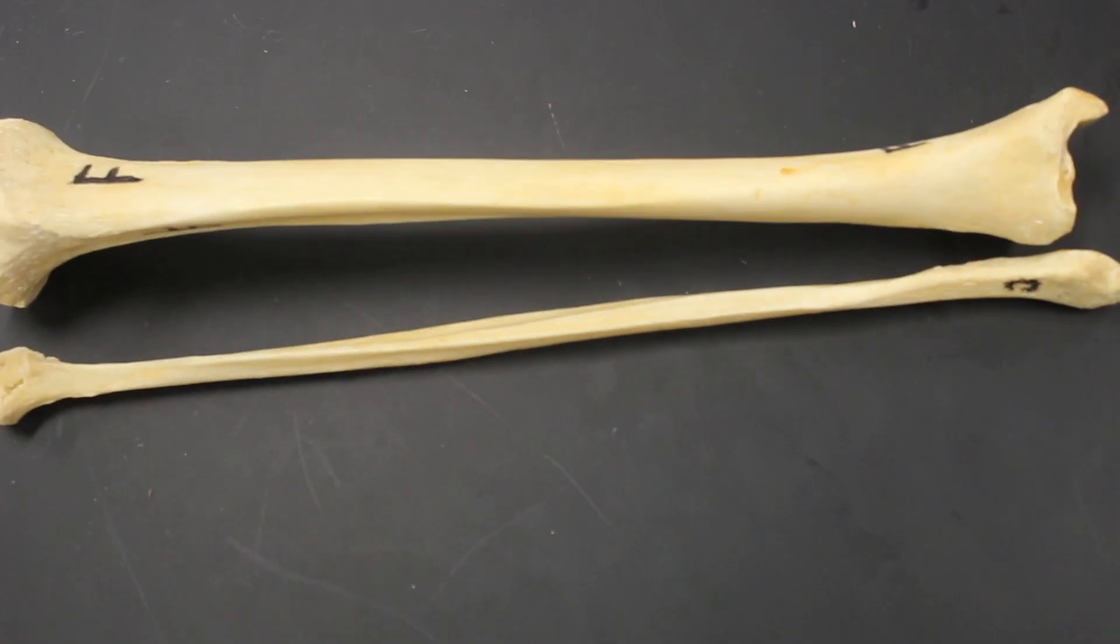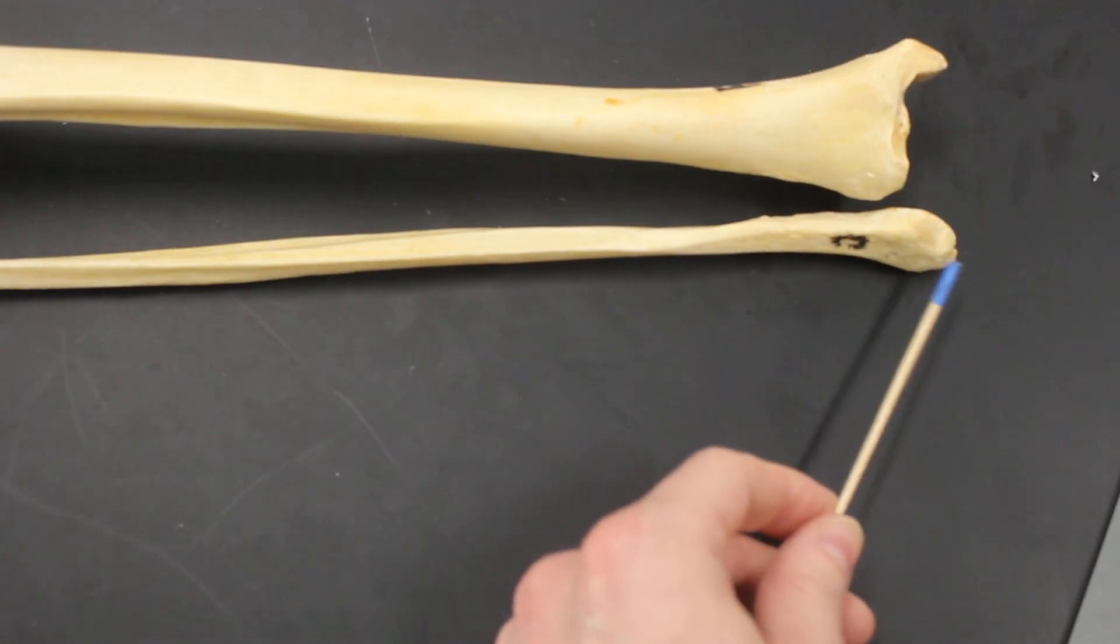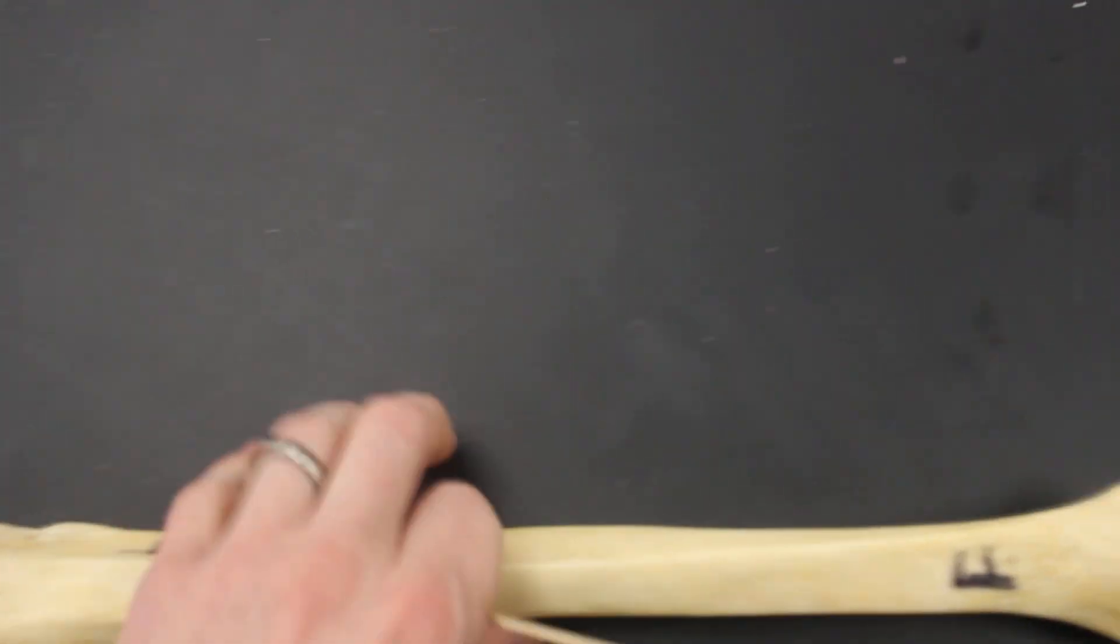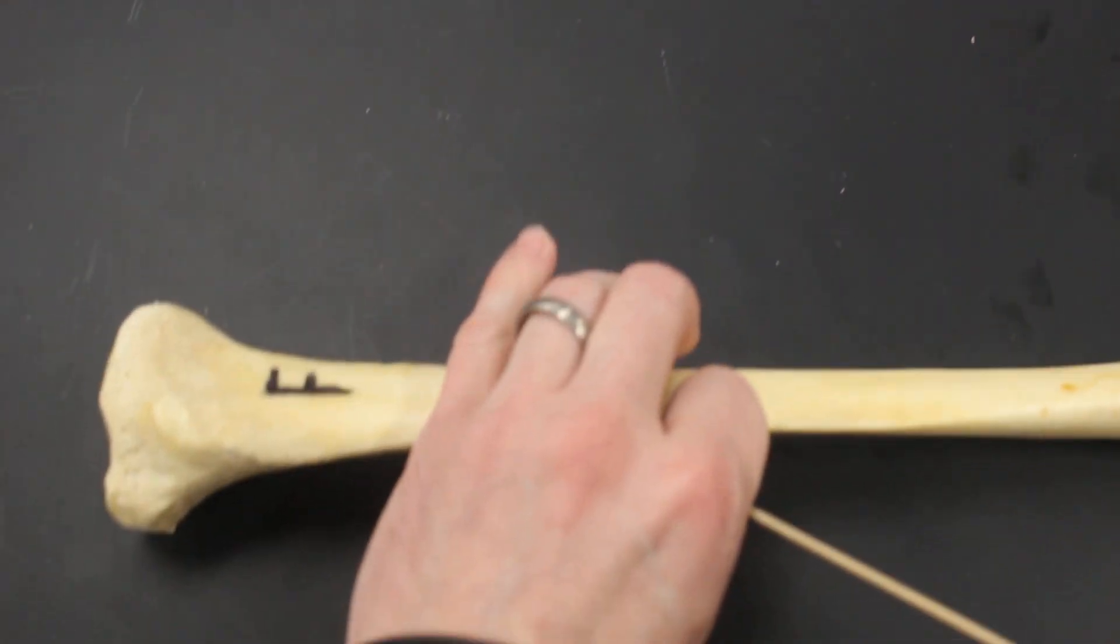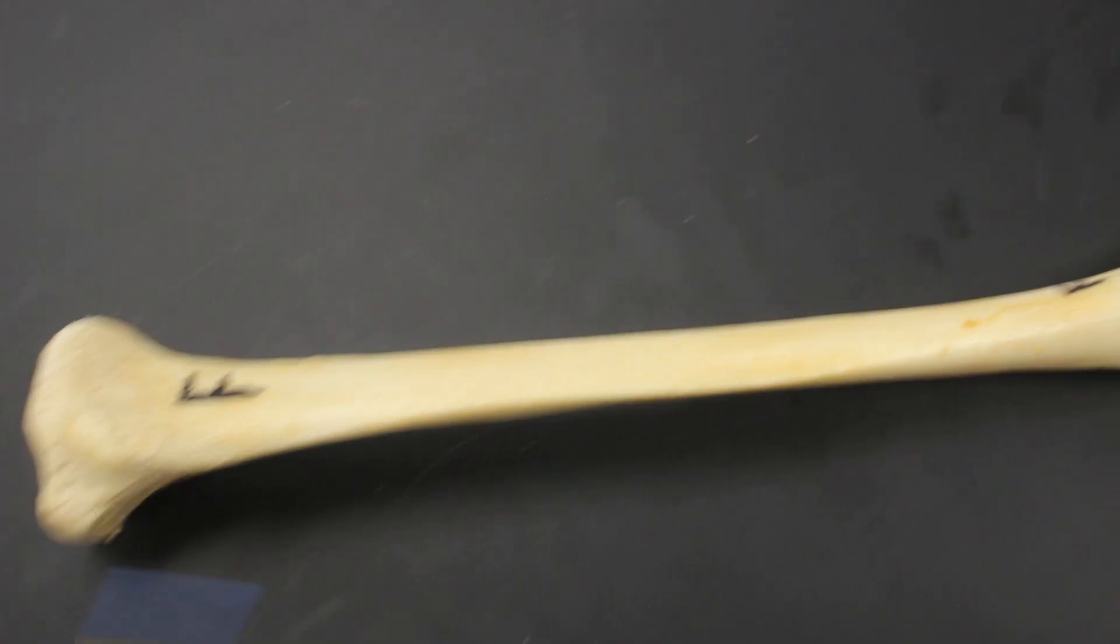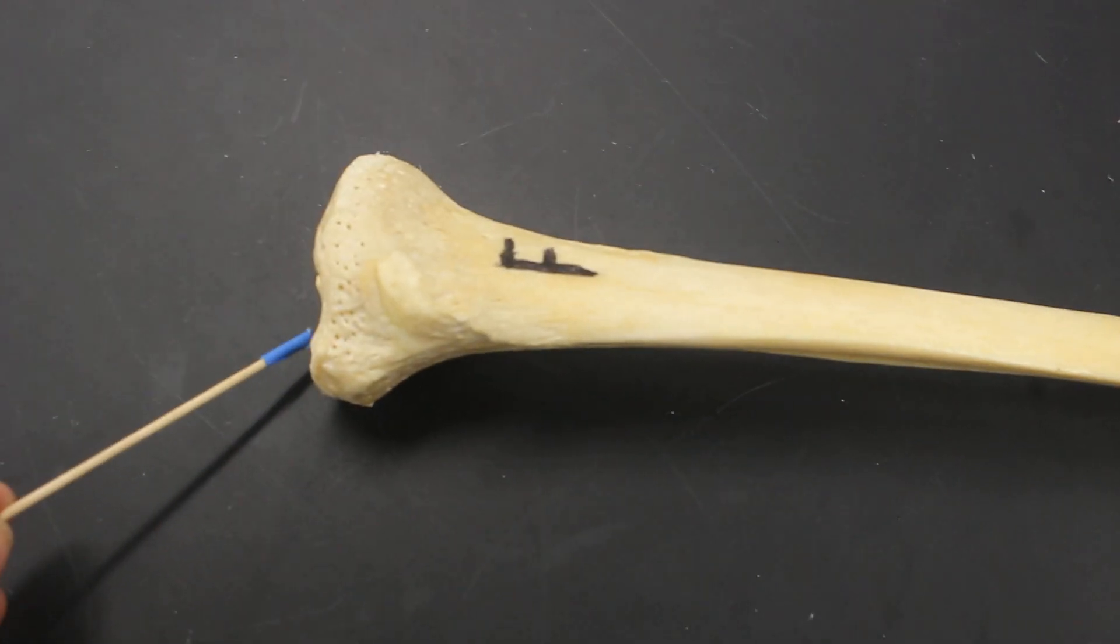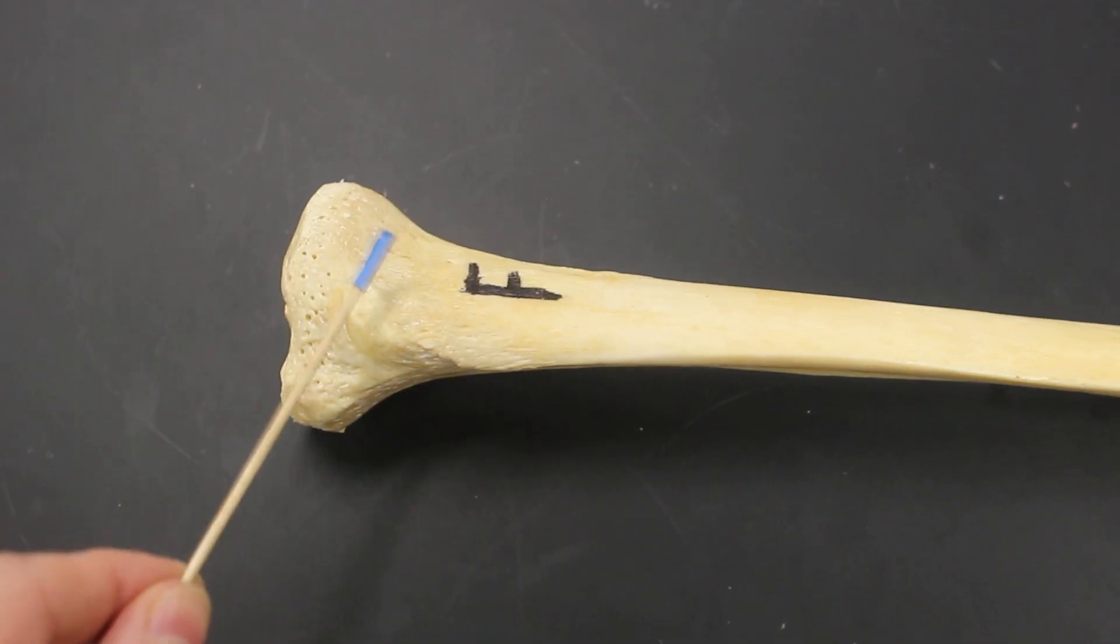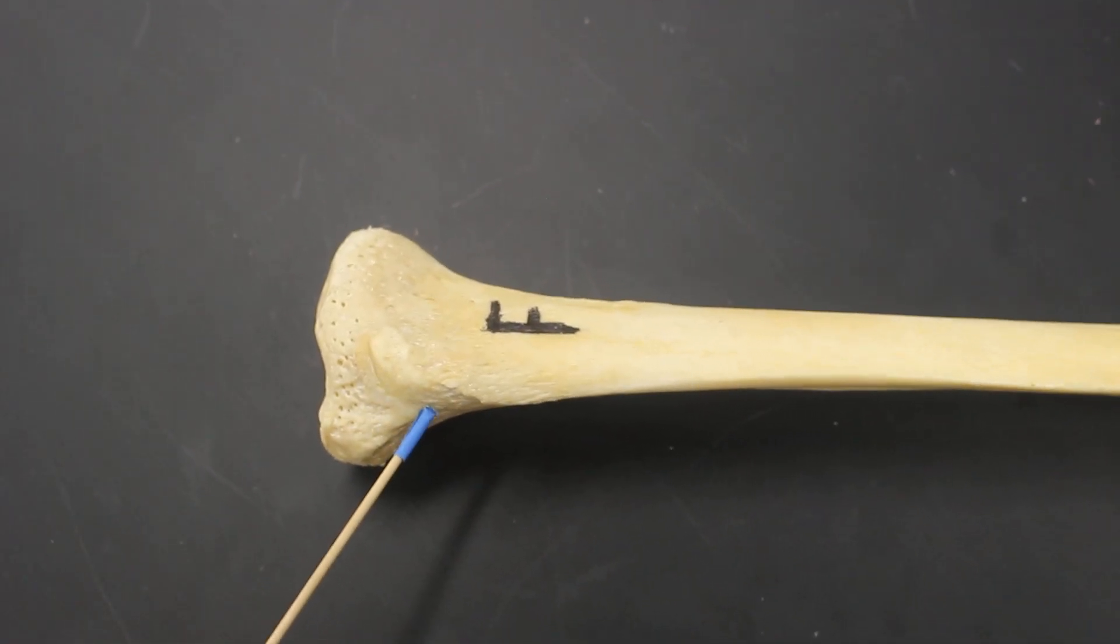The fibula ends at its distal end with the lateral malleolus. The tibia, on the other hand, has the medial condyle, the lateral condyle, the tibial tuberosity.